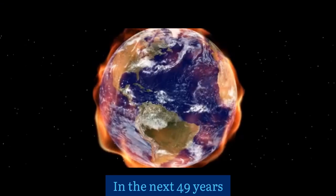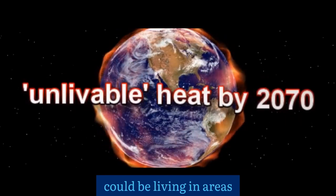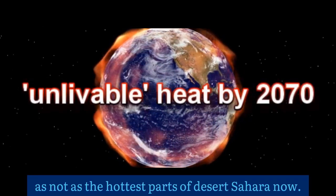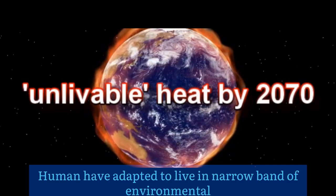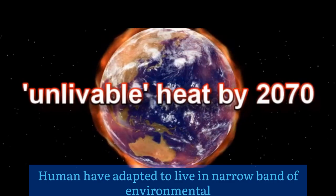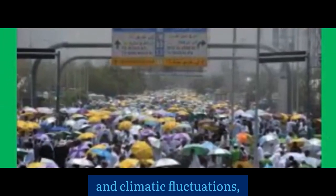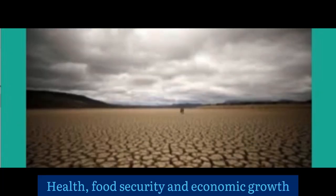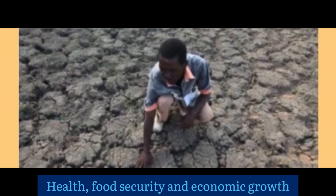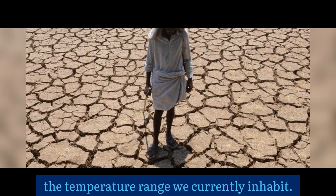In the next 49 years, a third of the world's population could be living in areas as hot as the hottest parts of the Sahara now. Humans have adapted to live in a narrow band of environmental and climatic fluctuations, but temperature rise could turn this. Health, food security and economic growth would face huge challenges outside the temperature range we currently inhabit.